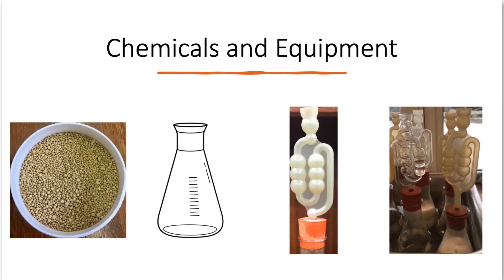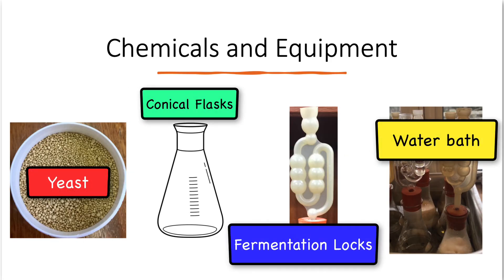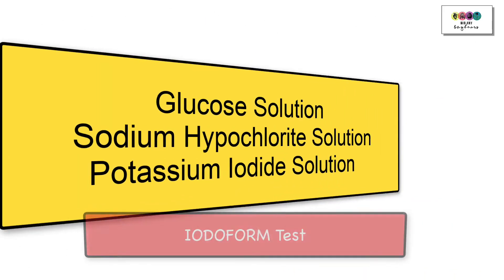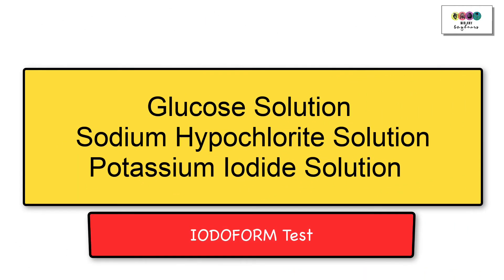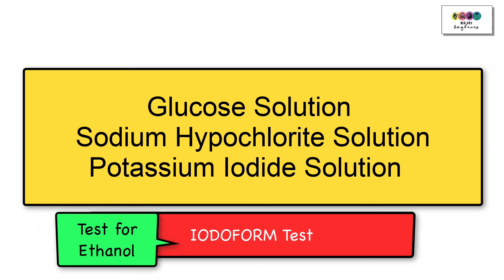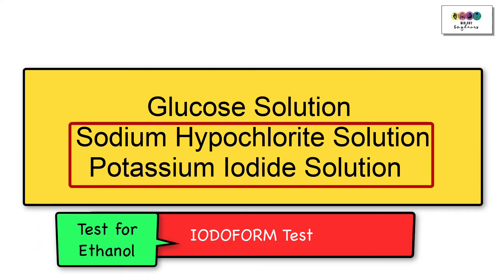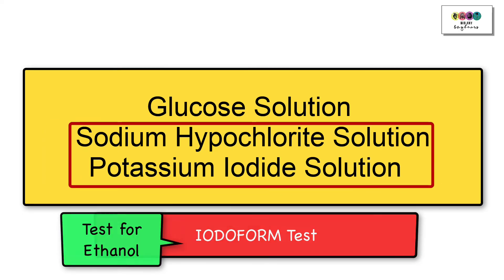For this practical we need yeast, conical flasks, and fermentation locks, which are really important. We also need a water bath or an incubator, glucose solution — because that's what's going to be broken down — and most importantly the chemicals to test for ethanol. We perform the iodoform test, so we need sodium hypochlorite solution and potassium iodide solution. It's very important that you remember the names of those two chemicals.